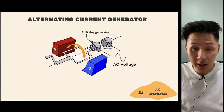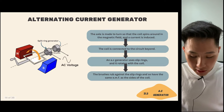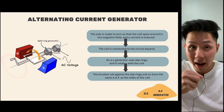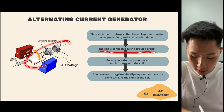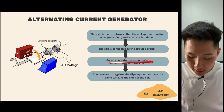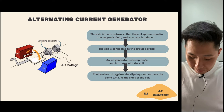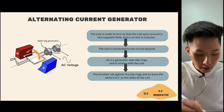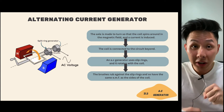Let's look into the AC generator, which uses the concept of electromagnetic induction. The axle is made to turn so that the coil rotates — movement is created either by hand or by water flow. The coil is connected to the circuit via slip rings that rotate with the coil, and brushes rub against the slip rings. With movement combined with a magnetic field, an alternating current is generated.